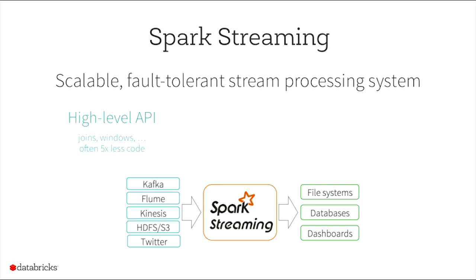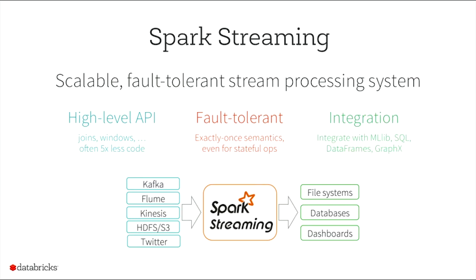One, a high-level API that gives you joins, windows, all of the streaming operations right out of the box — often 5x less code, similar to the difference between Spark versus Hadoop MapReduce. Two, it is fault-tolerant: the system takes care of all kinds of failures, driver failures, executor failures, all of that. And third, what makes it very unique is integration with the other members of the Spark ecosystem, which makes it unique compared to any other streaming system.